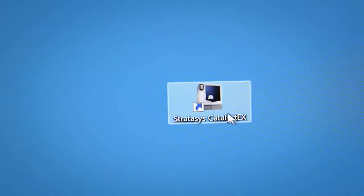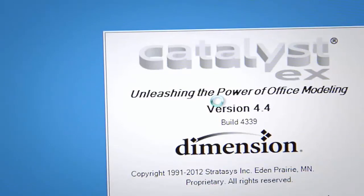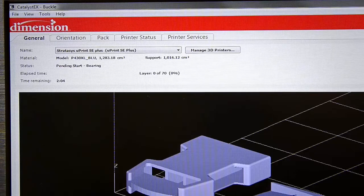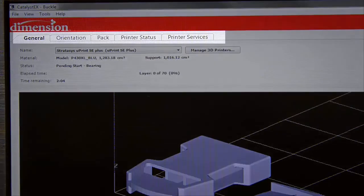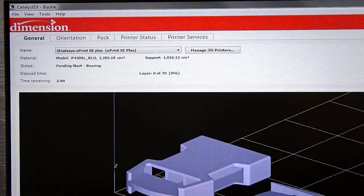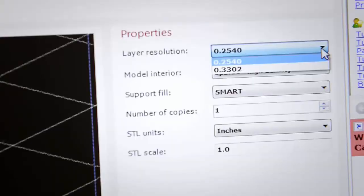Looking at the software, the Uprint SE Plus comes with Stratasys Catalyst EX software. The top menu tab reflects the process for preparing your design for printing. If we look at first the tab General, this gives general machine status, such as time remaining to print.